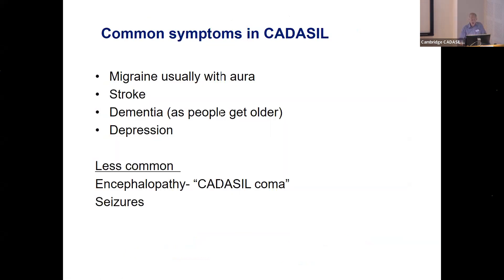The symptoms you get in CADASIL are: migraine — the most common symptom, occurring in about 70% of people. CADASIL migraine is a bit different from normal migraine because it usually occurs with an aura — visual disturbance, numbness, speech disturbance, or sometimes confusion — whereas in the general population only about 10% of migraines occur with an aura. Then there are the small strokes I just showed you. As people get older, memory problems and dementia can develop. Depression also seems more common than would be expected by chance — partly the stress of having the disease, but there also seems to be some way in which brain damage makes you more predisposed to depression.